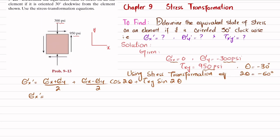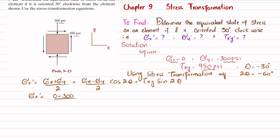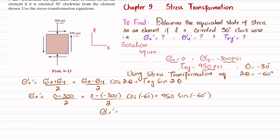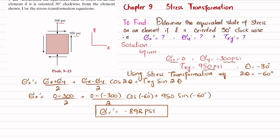When you rotate the element 30 degrees clockwise, sigma x' = (0 + (−300))/2 + (0 − (−300))/2 · cos(−60°) + 950 · sin(−60°). When you solve this, sigma x' comes out to be minus 898 psi. This is the transformed component in the x' direction.